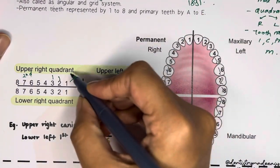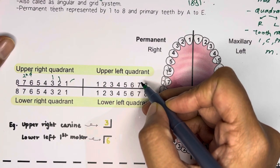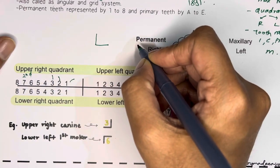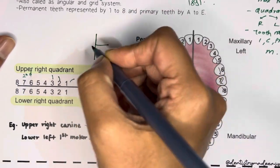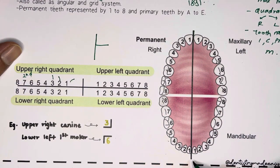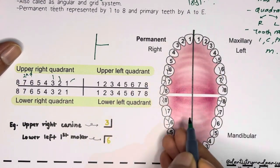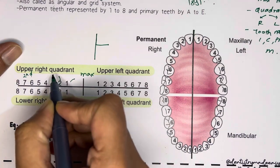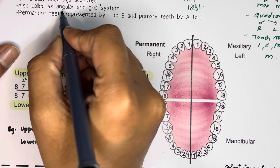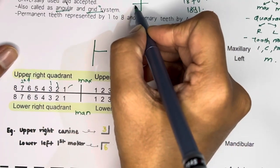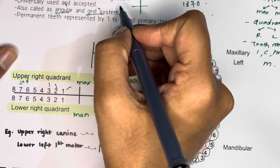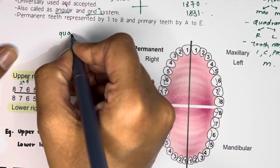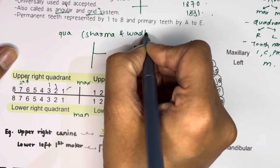The Zsigmondy-Palmer system uses a graphical device to specify the quadrant of the mouth. They made an L-shaped mark used with a vertical line segment representing the subject's midline. The vertical line is the patient's midline, and the horizontal line represents which arch it is — upper ones are the maxillary arch and lower ones are the mandibular arch. Because of these vertical and horizontal segments, this system is also called the angular or grid system, as it denotes the tooth quadrant.